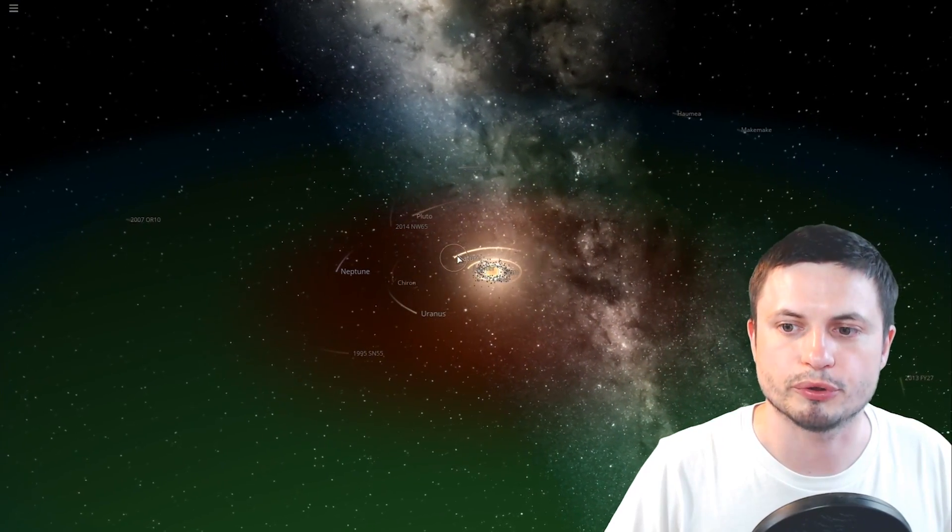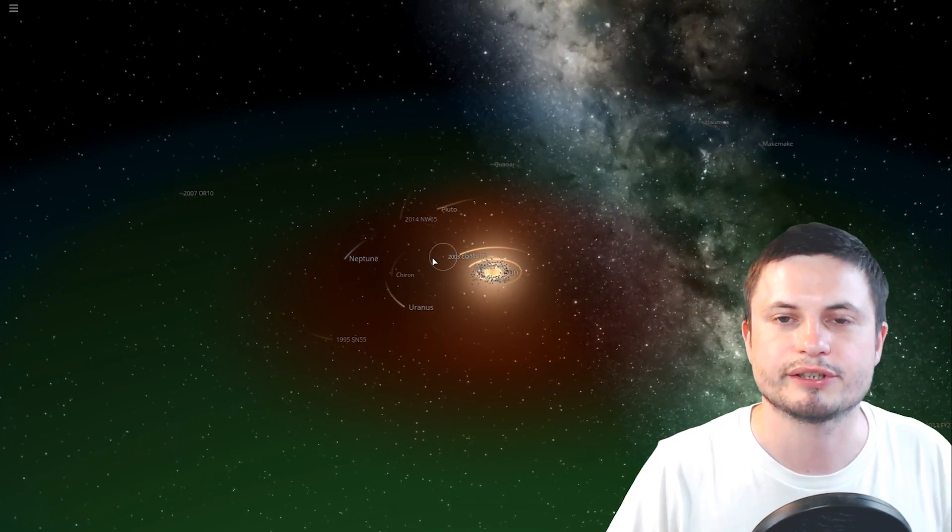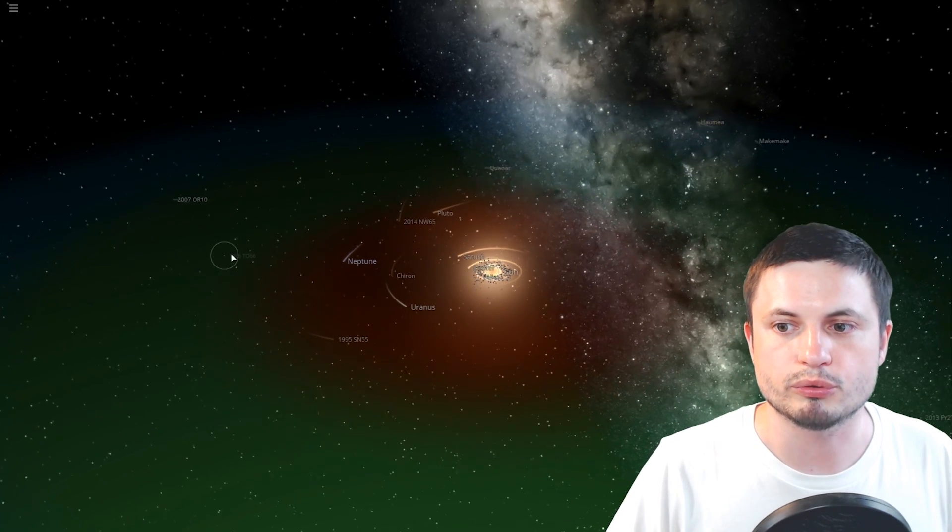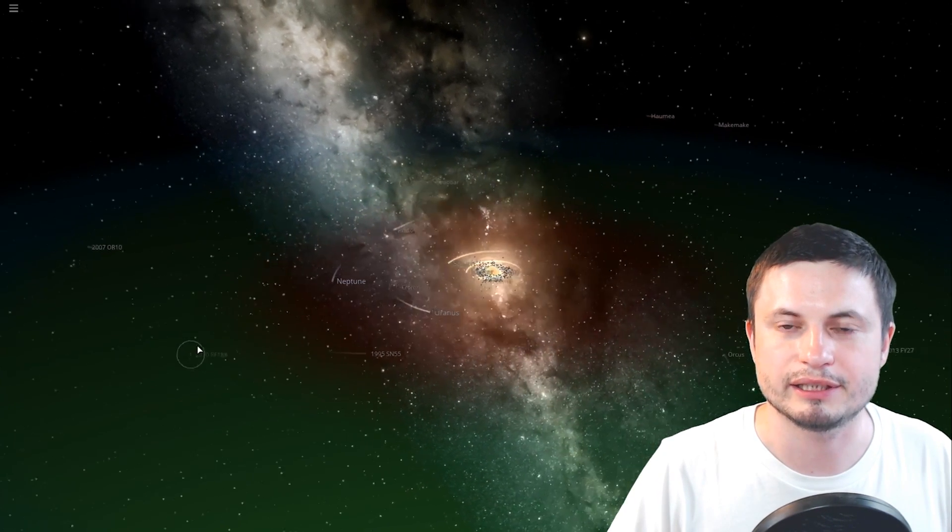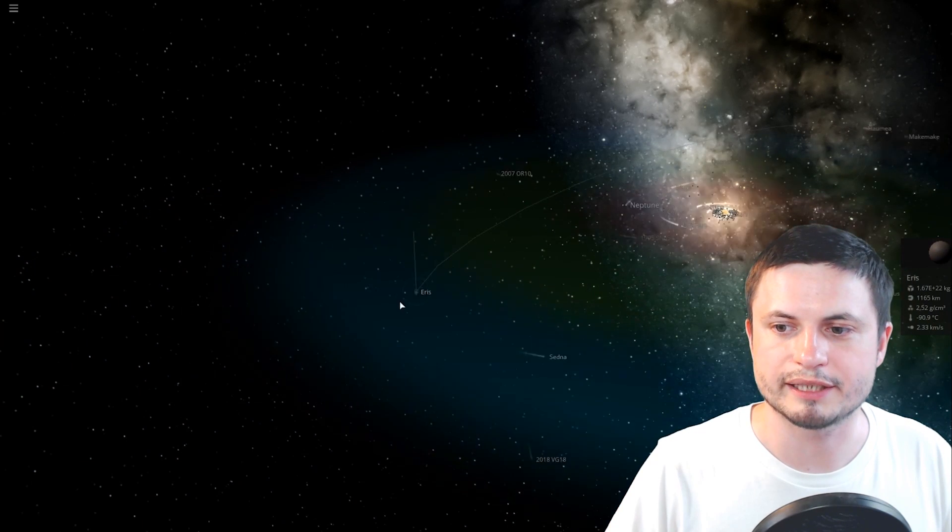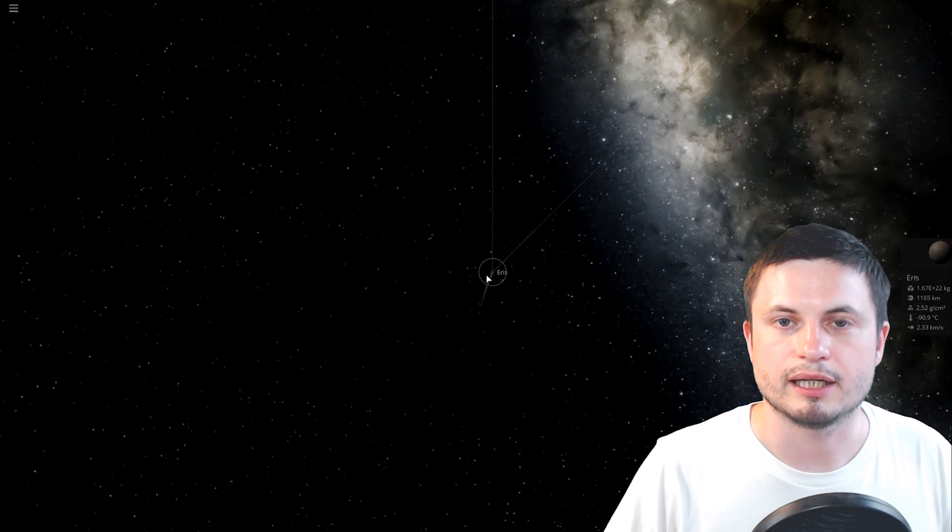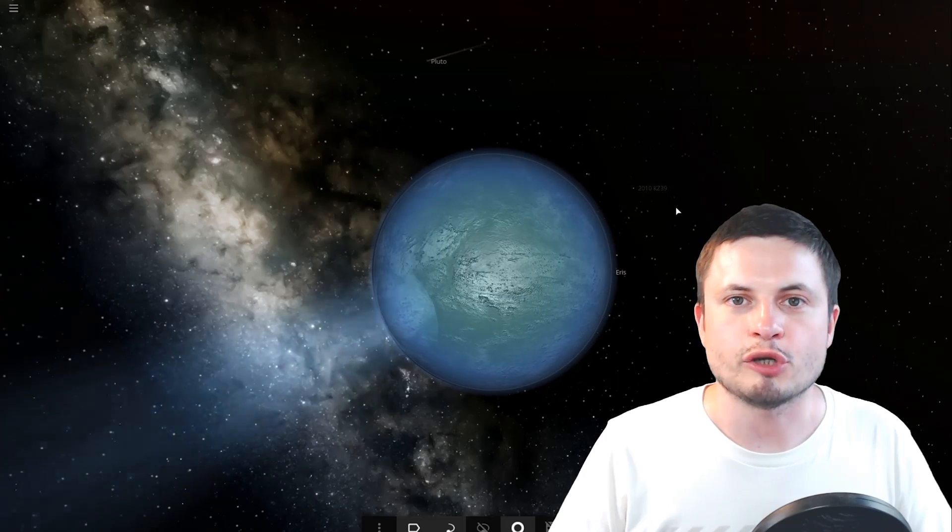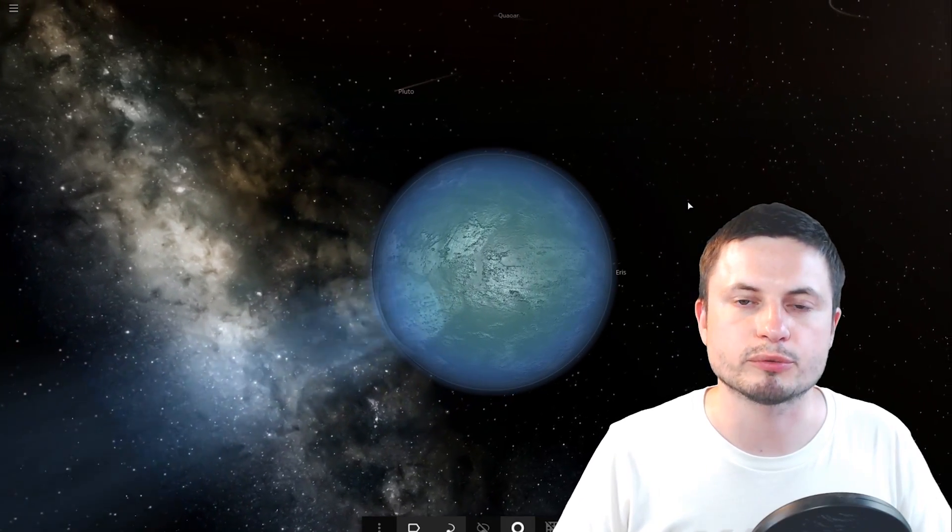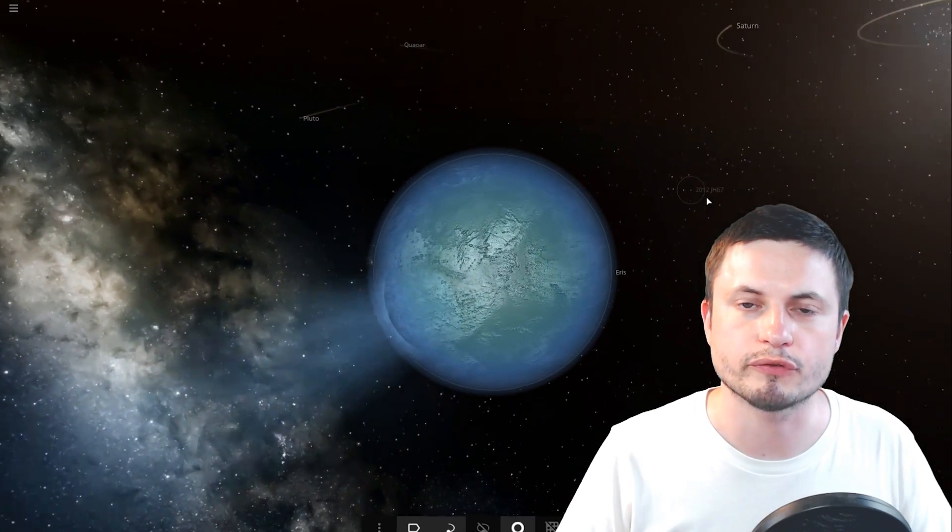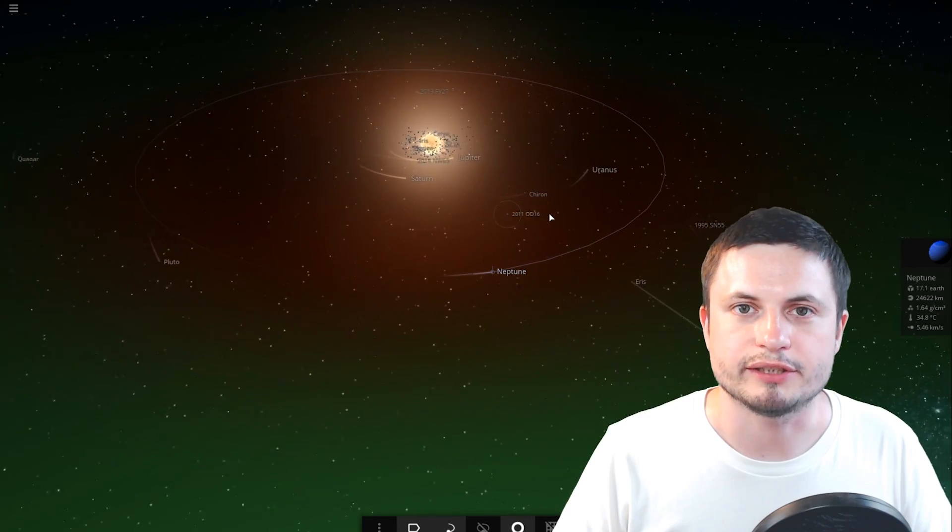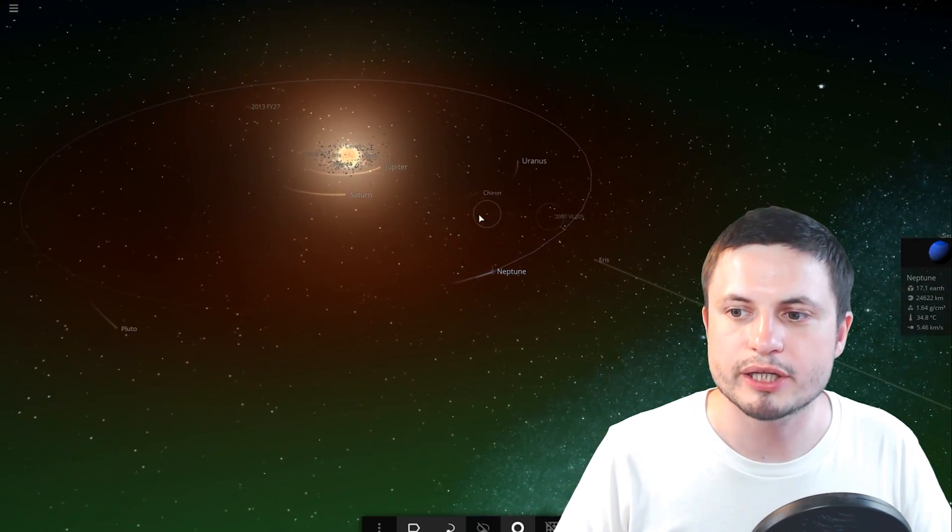Our sun is going to get so big that it's going to first swallow Mercury, then Venus, and then possibly even Earth. Mars may survive but we're not really sure yet. At that point though, the habitable zone is going to be really far away, probably past Pluto. The estimates right now suggest distances of about 40 to 70 astronomical units. Objects in this vicinity, for example all these dwarf planets like Eris and Sedna, might turn quite habitable. They'll probably become somewhat habitable looking water worlds with quite a lot of liquid water on the surface.